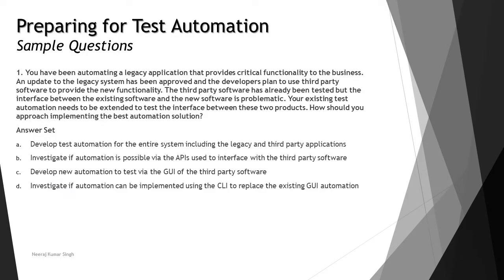You have been automating a legacy application that provides critical functionality to the business. An update to the legacy system has been approved and the developers plan to use third-party software to provide the new functionality. The third-party software has already been tested, but the interface between the existing software and the new software is problematic. Your existing test automation needs to be extended to test the interface between these two products. How should you approach implementing the best automation solution?